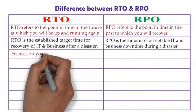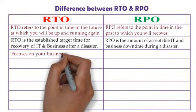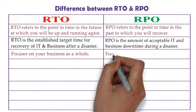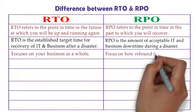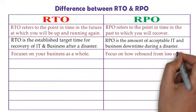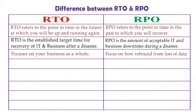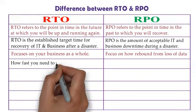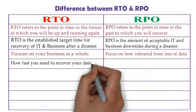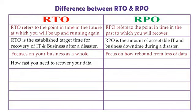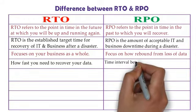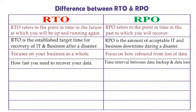RTO focuses on your business as a whole. On the other hand, RPO focuses on how to rebound from loss of data. In RTO, the question is how fast you need to recover your data. On the other hand, in RPO, it is the time interval between the data backup and data loss.